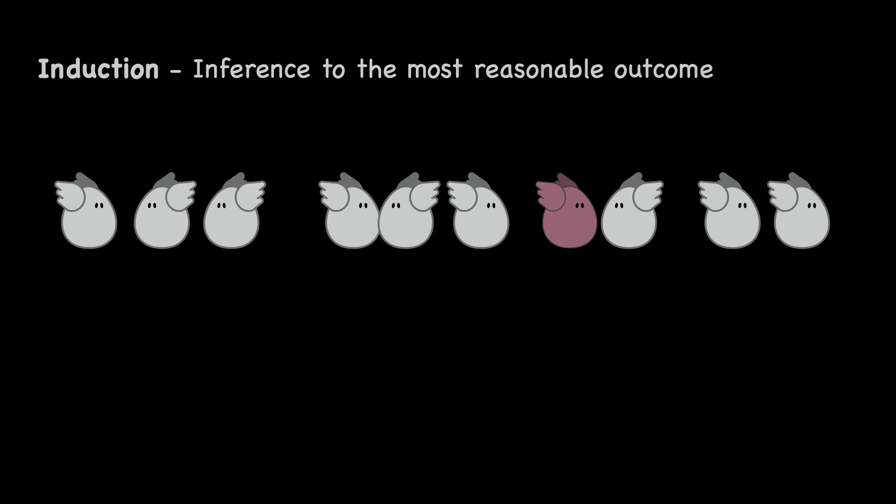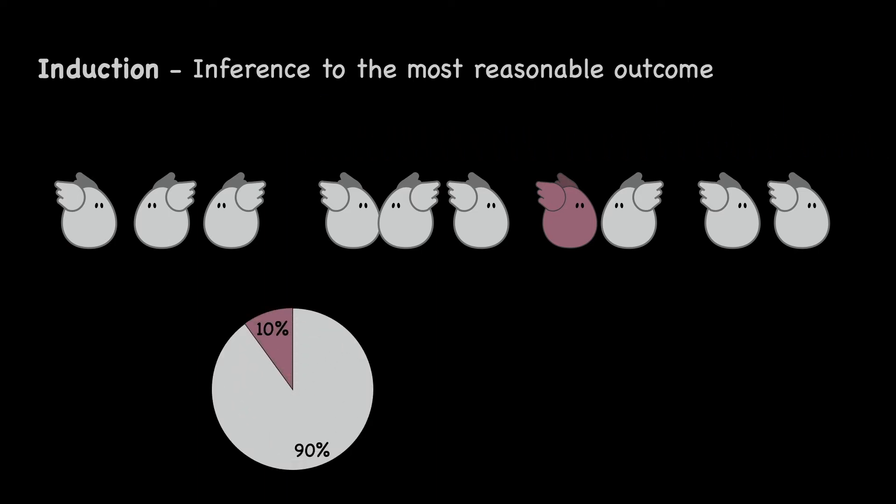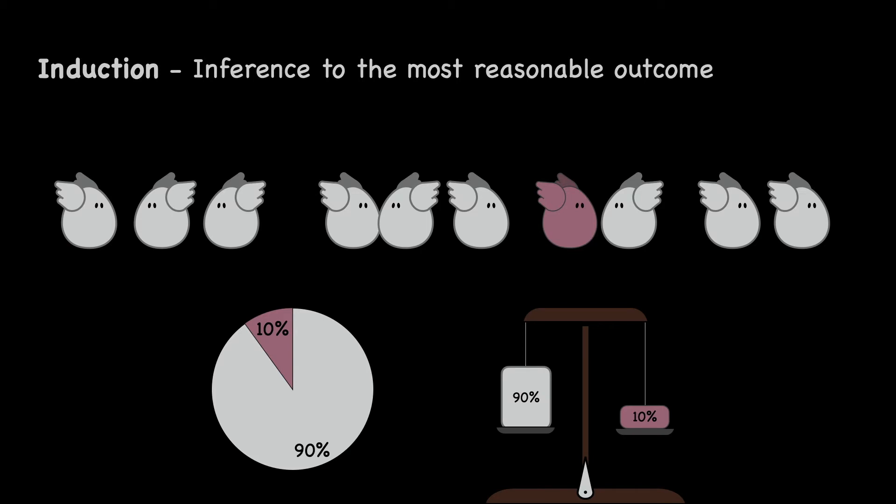When it comes to finding the most reasonable outcome, we fulfill the sufficient reason criteria by choosing the outcome that is the most probable, usually found through statistics. For example, when selecting at random, there is a higher probability of selecting a white swan. So if we had to make a prediction, we would choose a white swan as the most reasonable outcome. Both outcomes are possible, but a higher probability provides a sufficient reason to tip the scale.